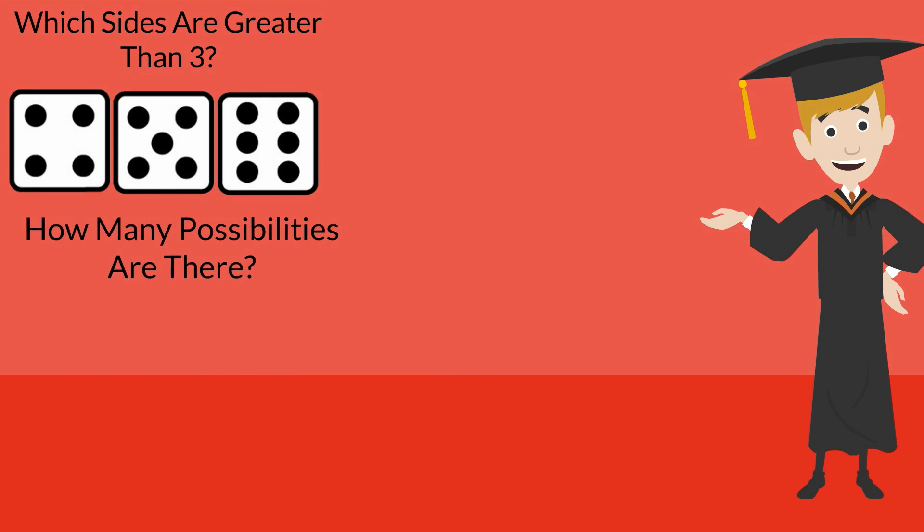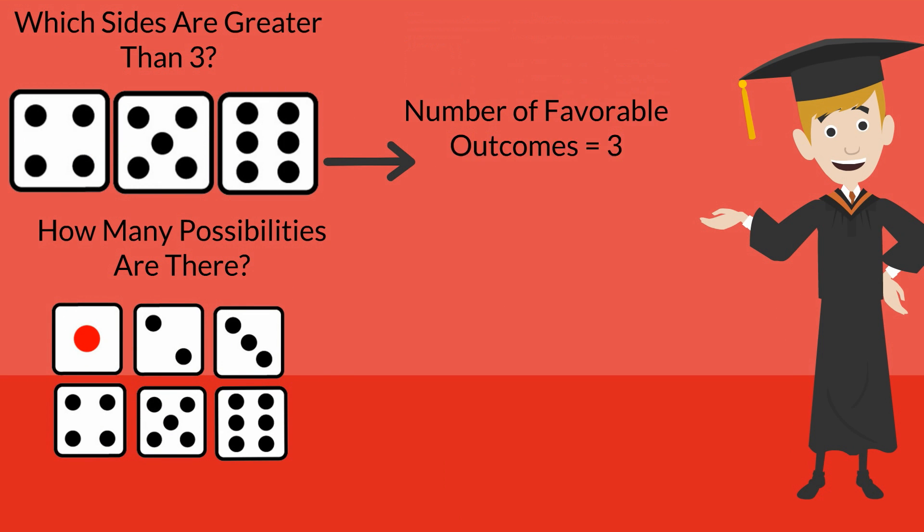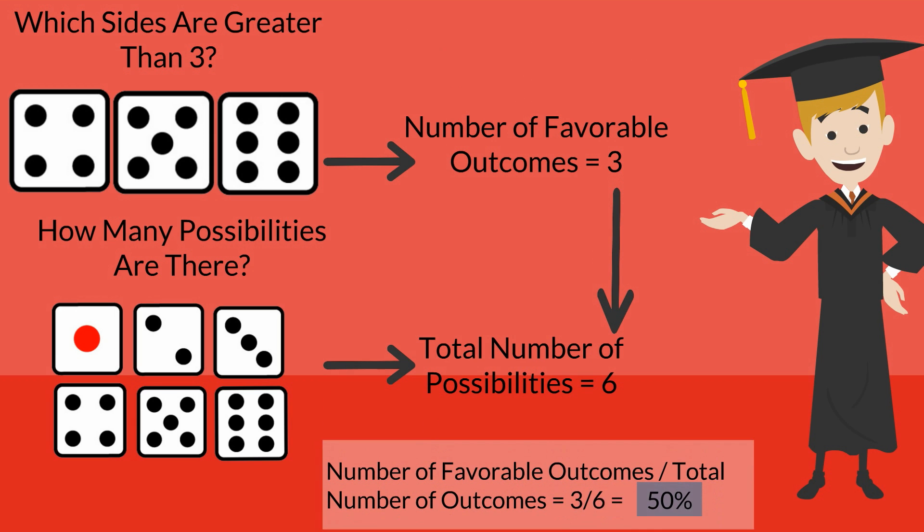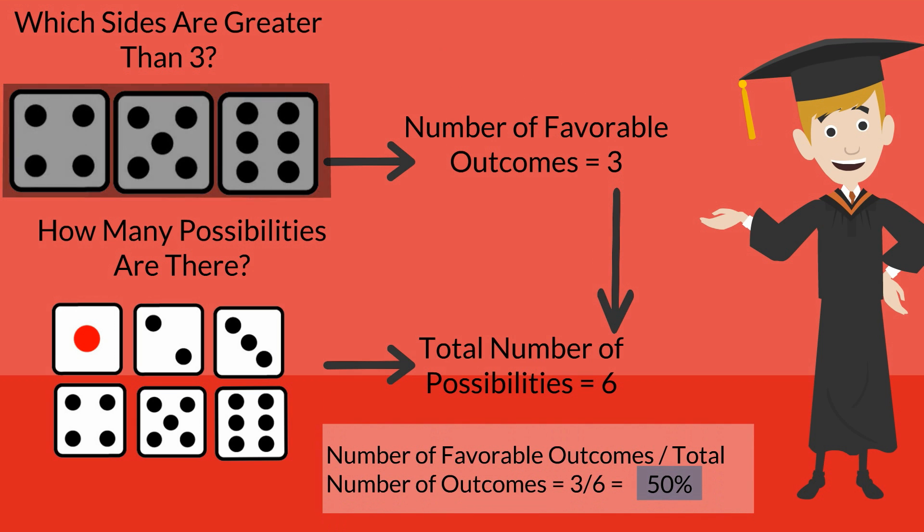This brings us to a very simple formula for calculating probability. All we have to do is divide the number of favorable outcomes by the total number of possibilities. In our case, there are three favorable outcomes that we divide by the total number of possibilities, which is six.